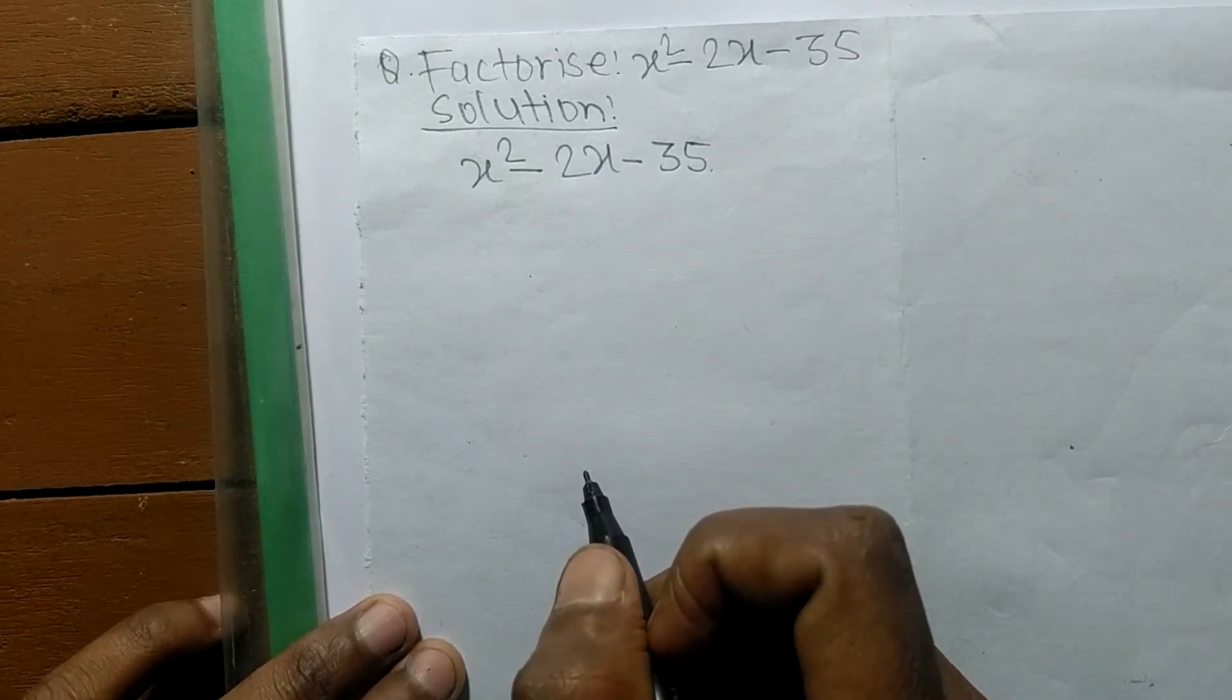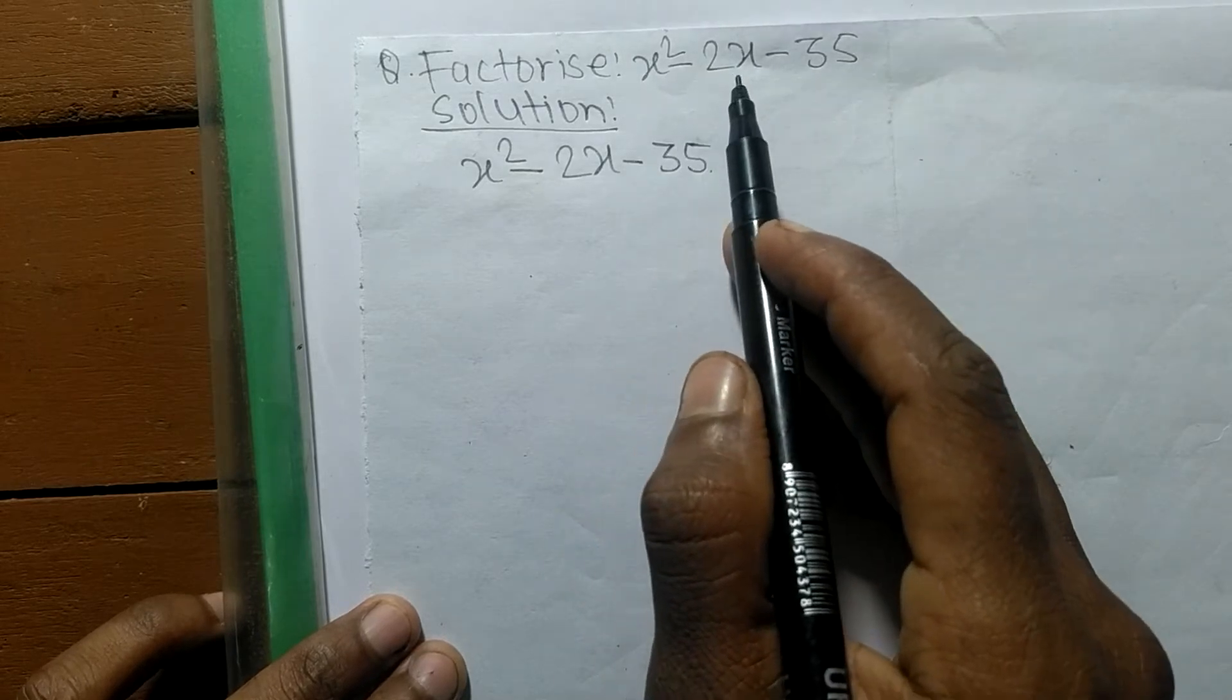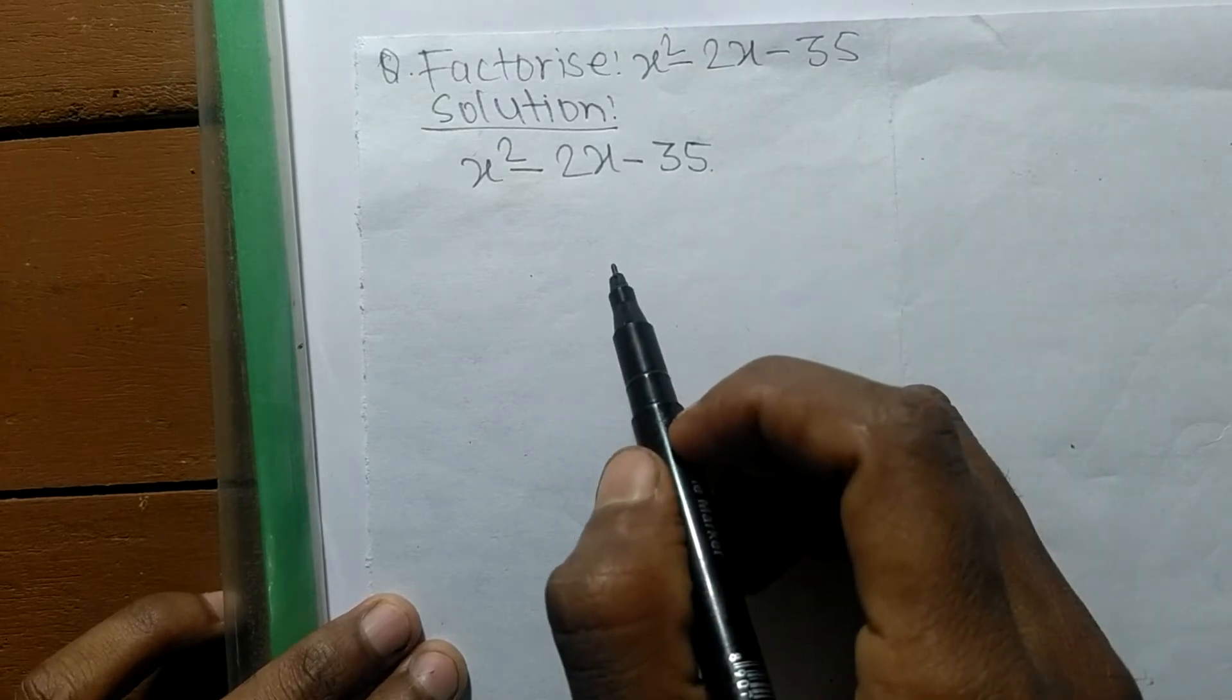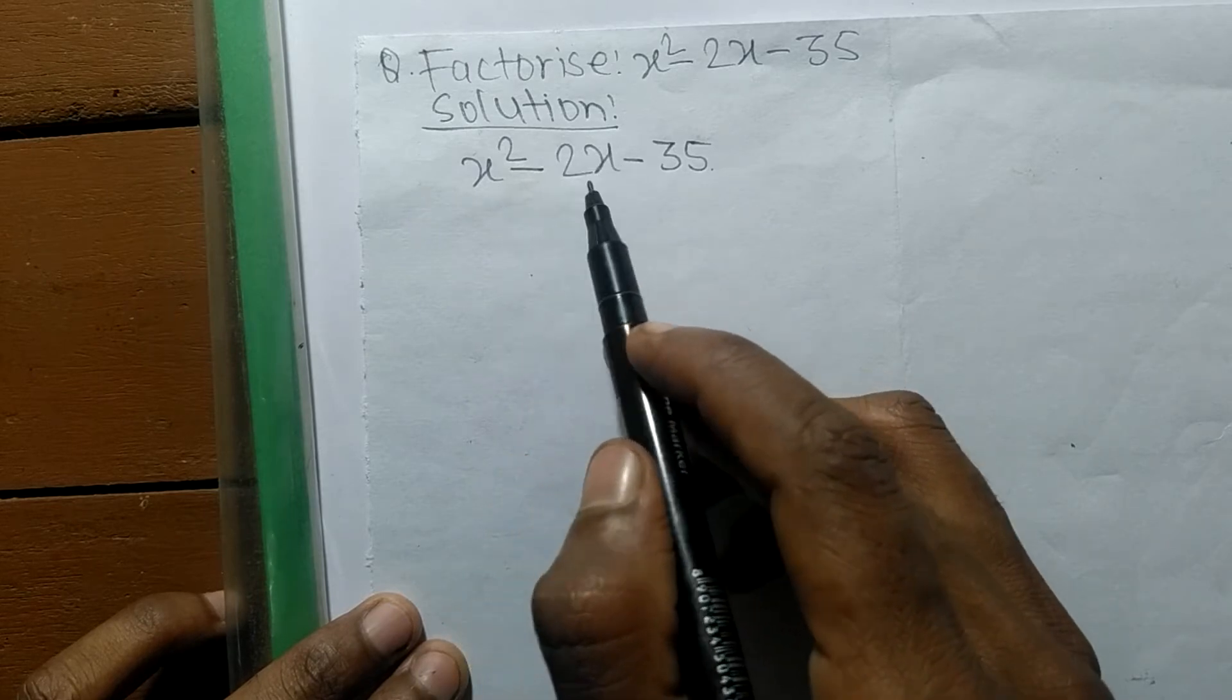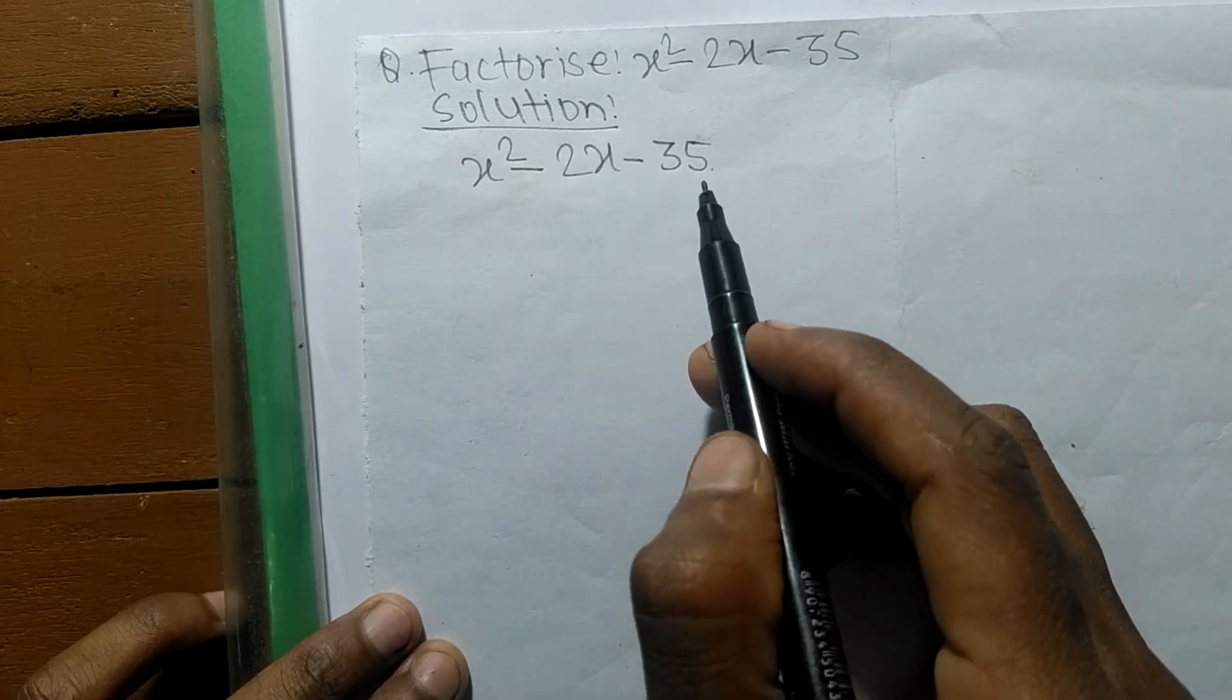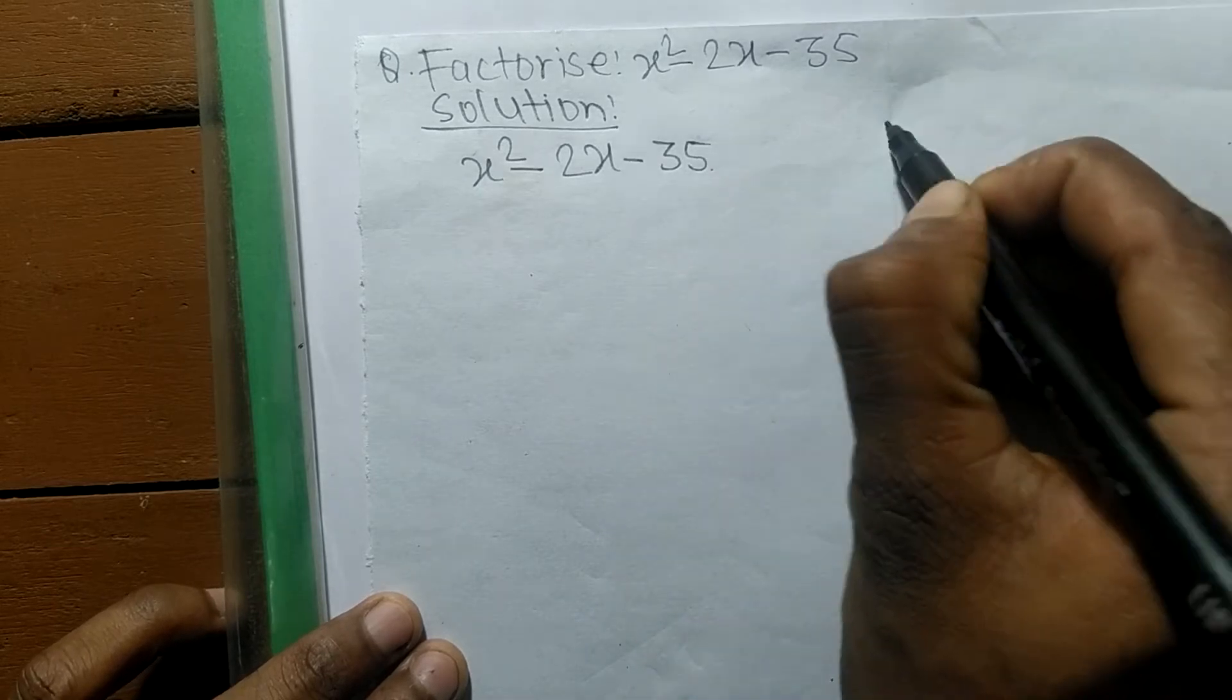So today in this video we shall learn to factorize x² - 2x - 35. For the solution of x² - 2x - 35, first of all we have to find out the prime factors of 35.